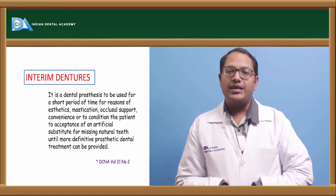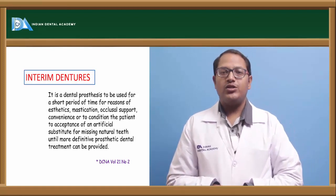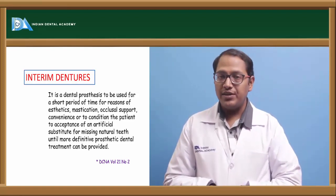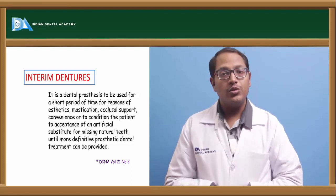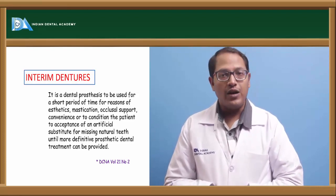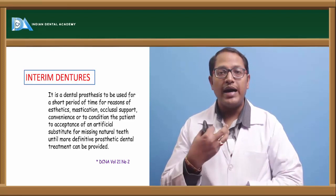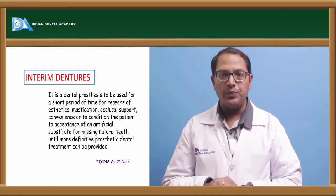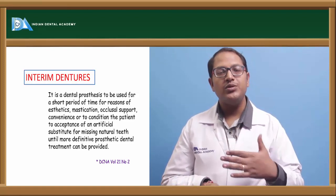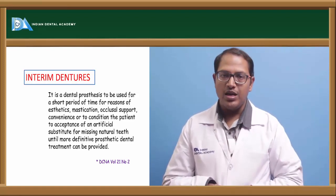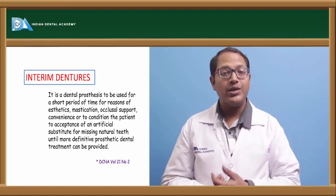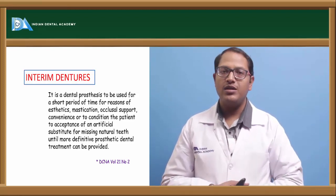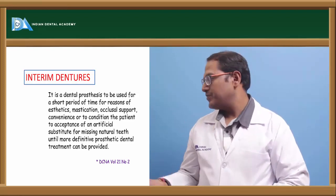Coming to interim dentures — what are interim dentures? Interim dentures are those dentures given to the patient for their aesthetic concerns, their functional habitation, their compatibility with the denture, and those dentures get adapted soon. These are the dentures that you need to replace after a time being, or make changes — relining and rebasing — before giving the final denture to the patient.